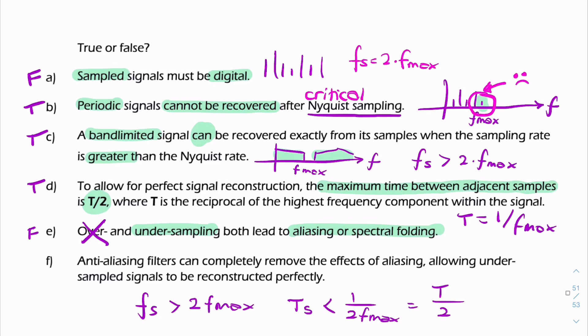And f: anti-aliasing filters can completely remove the effects of aliasing, allowing under-sampled signals to be reconstructed perfectly. Now, anti-aliasing cannot reverse the effect of aliasing. It can't remove the effects of aliasing.